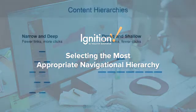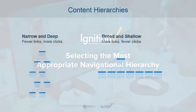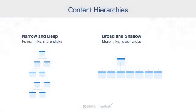There are two basic approaches to your project's architecture. You can go narrow and deep or broad and shallow. With both, you're into what we like to call the Goldilocks problem — getting the structure to be not too deep, not too shallow, but just right.